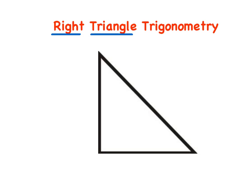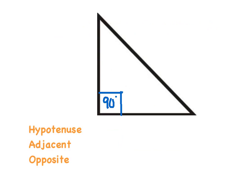In my corner here I have a right angle, and to represent that we're just going to draw a box in that corner. A right angle means 90 degrees — hopefully that's a little review for you. Now, the three sides of your triangle are very important. There are three names we want to get used to using, and those three words are: hypotenuse, adjacent, and opposite.